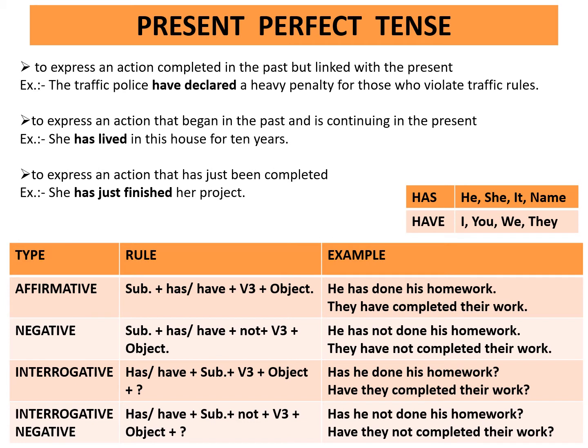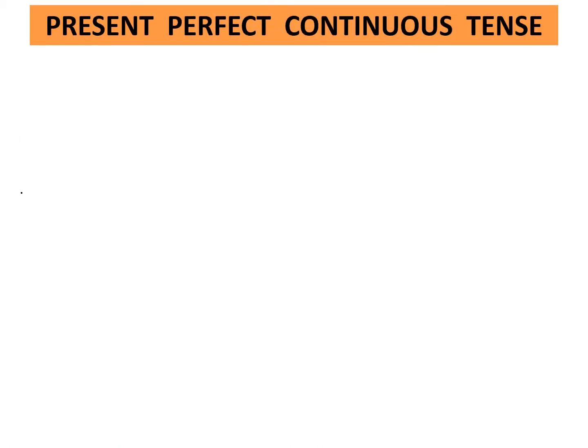Interrogative negative rule: has or have plus subject plus not plus third form of the verb plus object plus question mark. Example: Has he not done his homework? Have they not completed their work?